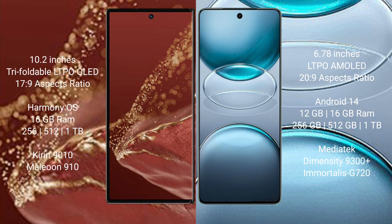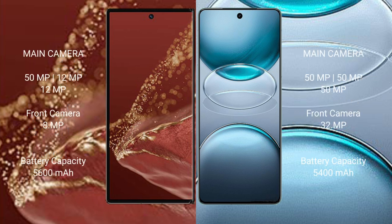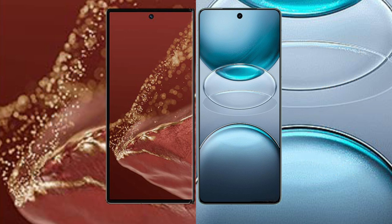The Huawei Mate XT Ultimate features a triple rear camera setup: 50MP plus 12MP plus 12MP, and an 18MP front camera. The Vivo X100s Pro has a triple rear camera setup: 50MP plus 15MP plus 15MP, and a 32MP front camera. The Mate XT Ultimate has a 5600mAh battery with 66W fast charging support, while the Vivo X100s Pro has a 5600mAh battery with 300W fast charging support.